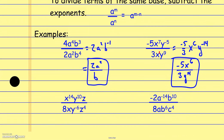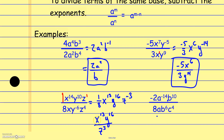There's a 1 out front here, so dividing gives 1 eighth. Subtracting exponents gives x to the 13th. For y, subtracting gives y to the 16th. Be careful: 10 minus negative 6 is like adding the opposite. For z, the denominator has z to the first, so subtracting gives z to the negative third. Taking care of negative exponents: numerator has x to the 13th and y to the 16th, denominator has z to the third.